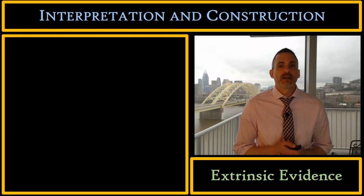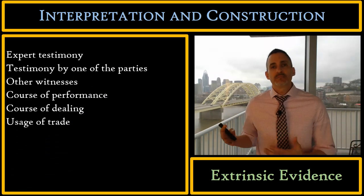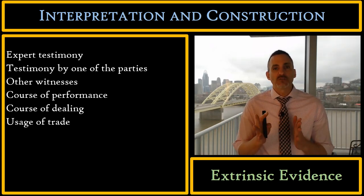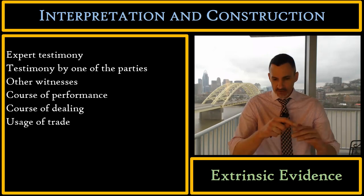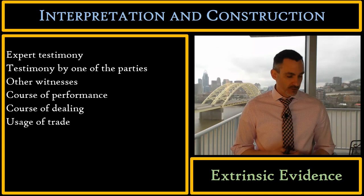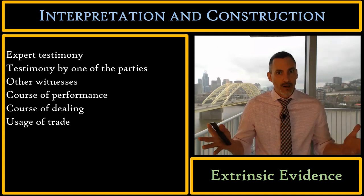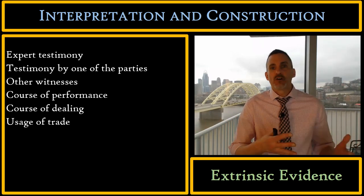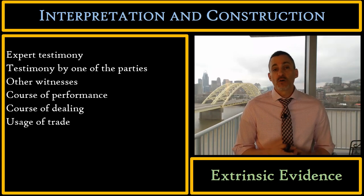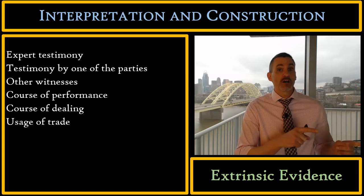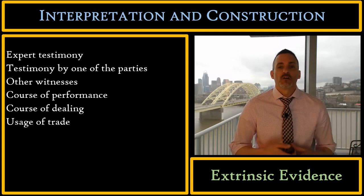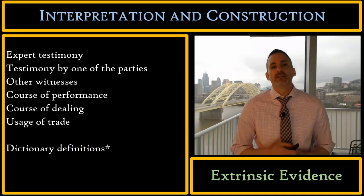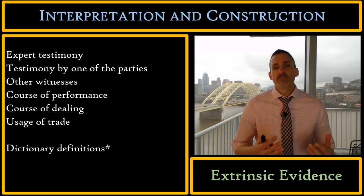Let's talk about the various different types of extrinsic evidence. Extrinsic evidence can simply be testimony — one party gets on the stand and gives some sort of evidence outside the four corners of the contract. There might be other witnesses who witnessed the contracting process, or you might have experts who say what a term means in a contract. Course of performance, course of dealing, and usages of trade are also considered extrinsic evidence. Dictionary definitions, however, are probably not extrinsic evidence — most courts don't consider them to be.